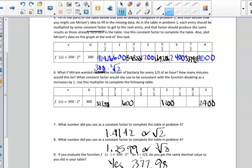In number six, we were asked, what if Miriam wanted to find the number of bacteria for every one-third of an hour, and how many minutes would this be? So we already know at every hour, we're going to double the amount of bacteria, so I've already filled that in. And the next thing is then to figure out,